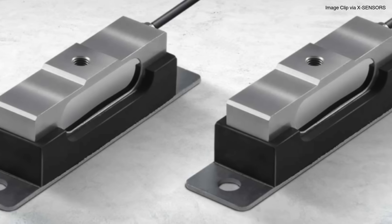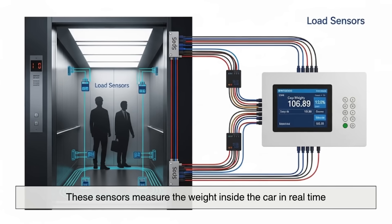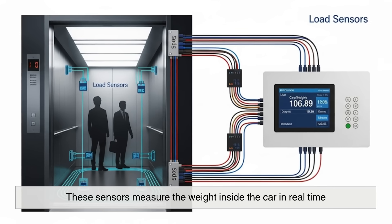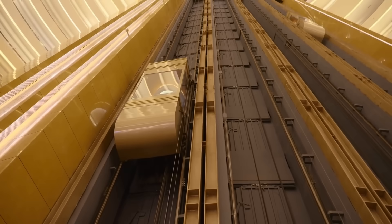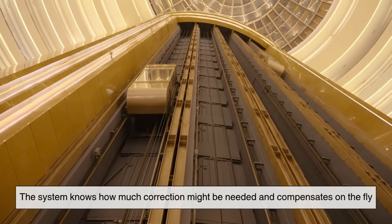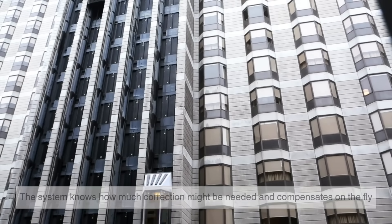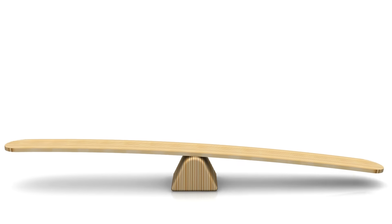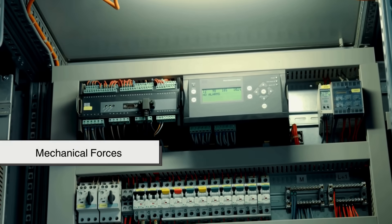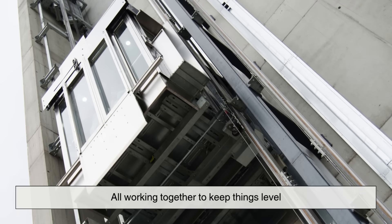Modern elevators solve this by including load sensors. These sensors measure the weight inside the car in real time and feed that data to the controller. So even before the car stops, the system knows how much correction might be needed and compensates on the fly. It's a constant balancing act, literally, between mechanical forces and digital controls, all working together to keep things level.